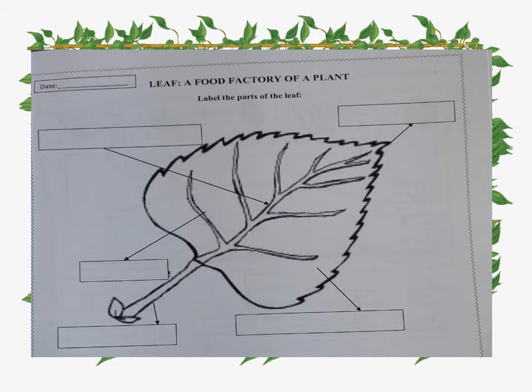In this we have to do, see the instruction first: Leaf, a food factory of a plant. Label the parts of the leaf. First of all you have to write the date of today on the top's left side.